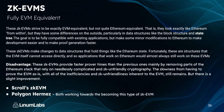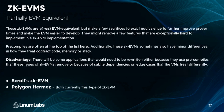Two notable examples working toward fully EVM equivalent ZK-EVMs are Scroll's ZK-EVM and Polygon Hermès — currently what they are is partially EVM equivalent. These ZK-EVMs are almost EVM equivalent but make a few sacrifices to further improve prover times and make the EVM easier to develop. They might remove a few features that are exceptionally hard to implement, with precompiles often at the top of that list. There can also be minor differences in how they treat contract code, memory, and stack, so some applications may need to be rewritten.